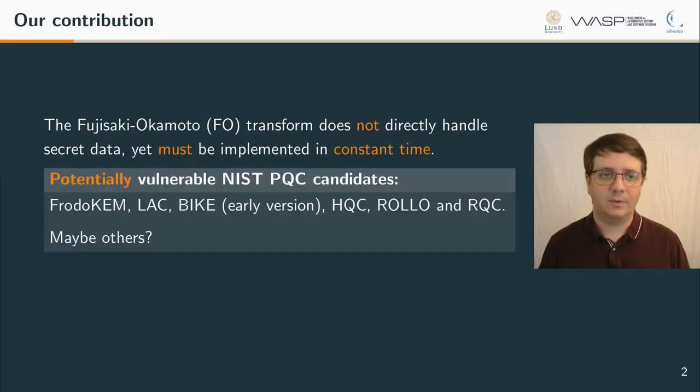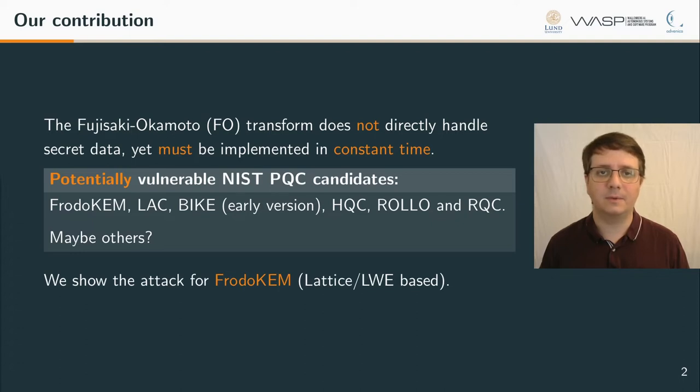And here today I'm also presenting a general attack. But we are targeting the Fujisaki-Okamoto construction which was not previously known has to be implemented in a constant time manner. And this is the core of our contribution. Namely that even though the FO transform does not actually handle any secret information it still needs to be implemented in constant time. This was apparently not well known before so we can see that the list of schemes that at some point in time did not implement the FO transformation in constant time is not so short.